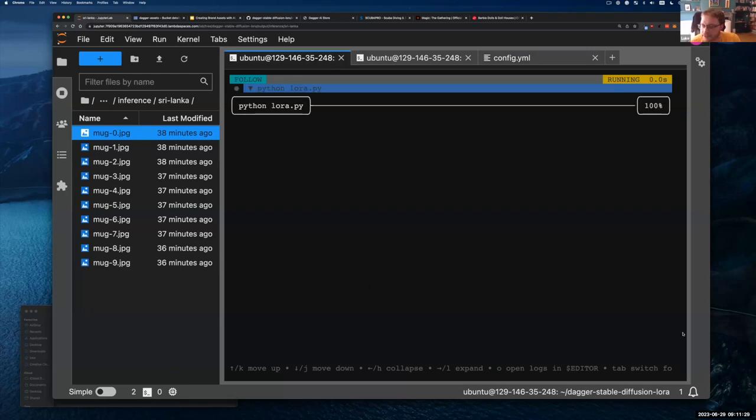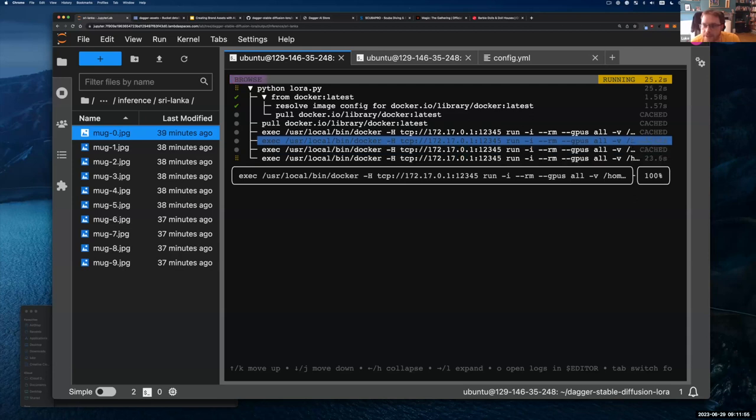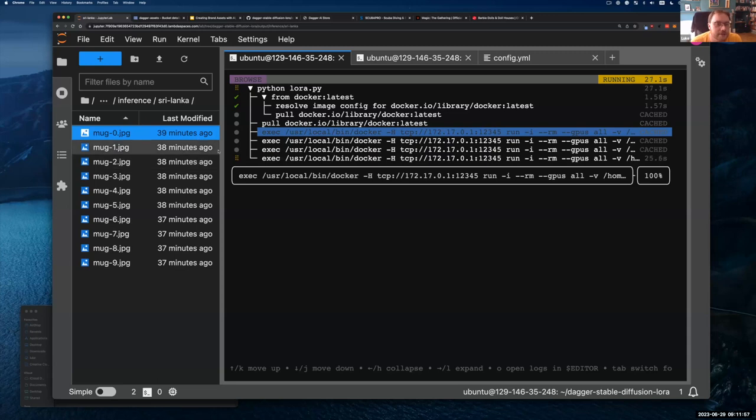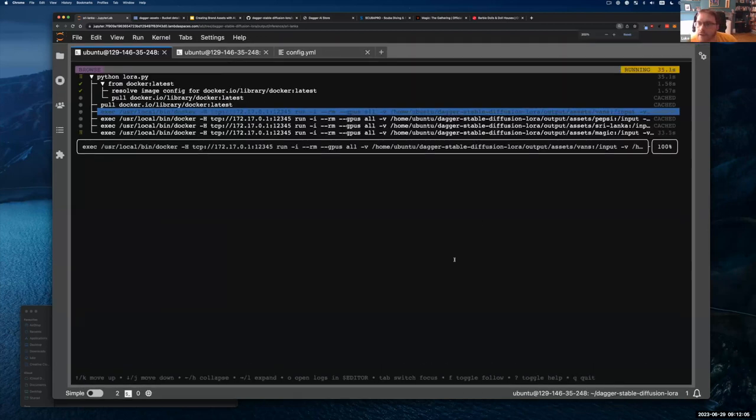And then what I'm going to do is I'm going to go into, for this sample app, I built a little config file and you can add brands in the config file. So I'm just going to add the one I just uploaded and then I'm going to run Dagger. So what this is going to do is it's going to run the code, which I'll show you in a minute.